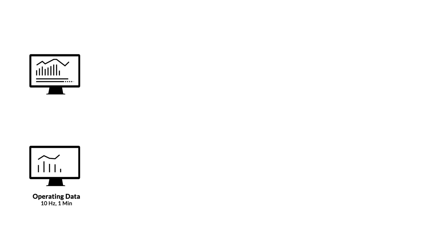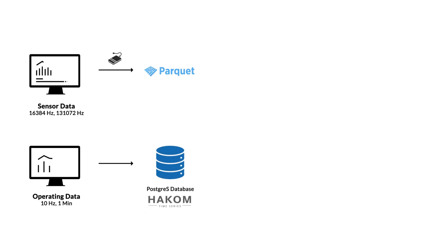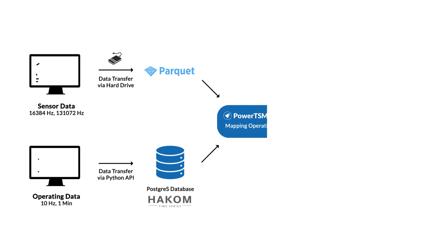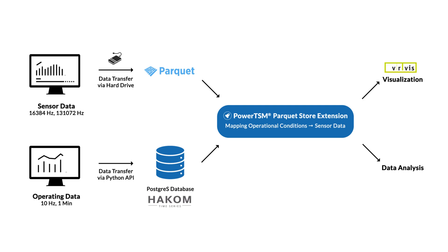We needed to store the low frequency data — we call it operating data — as well as the high frequency data — we call it the sensor data. Though we have decades of experience, working with high frequency data was quite challenging. We needed to process the data with a frequency of up to 131 kHz, which means 131,000 data points per second. For this, our PowerTSM technology has an important advantage.